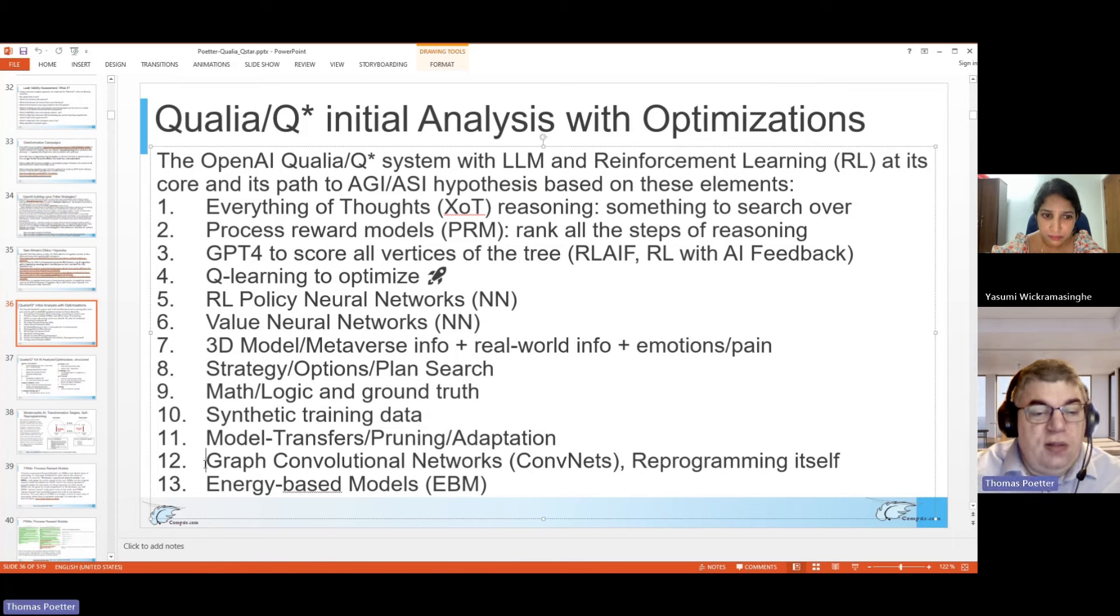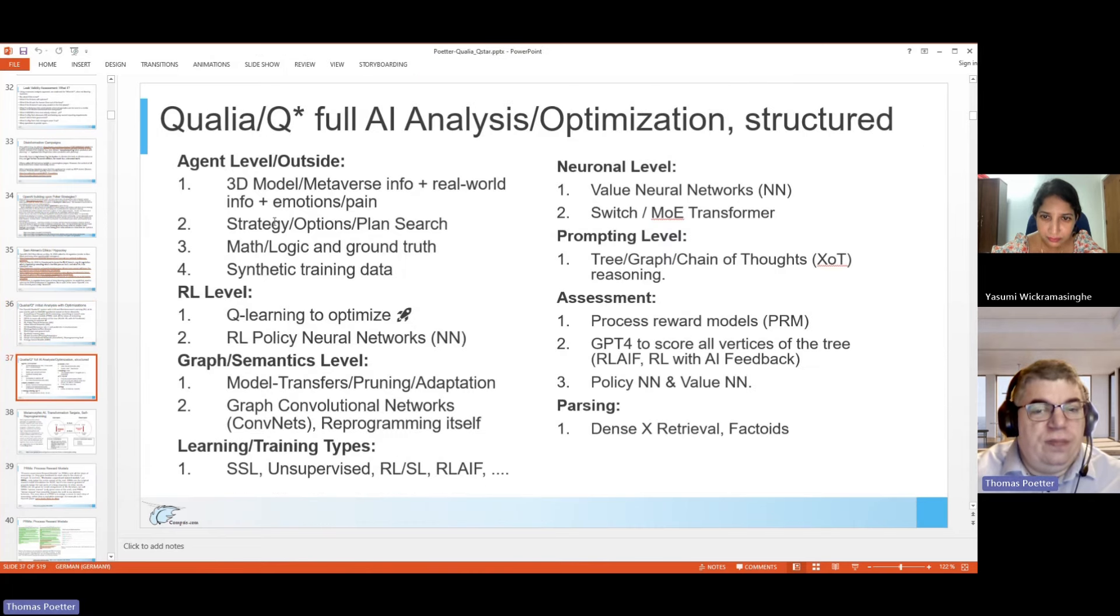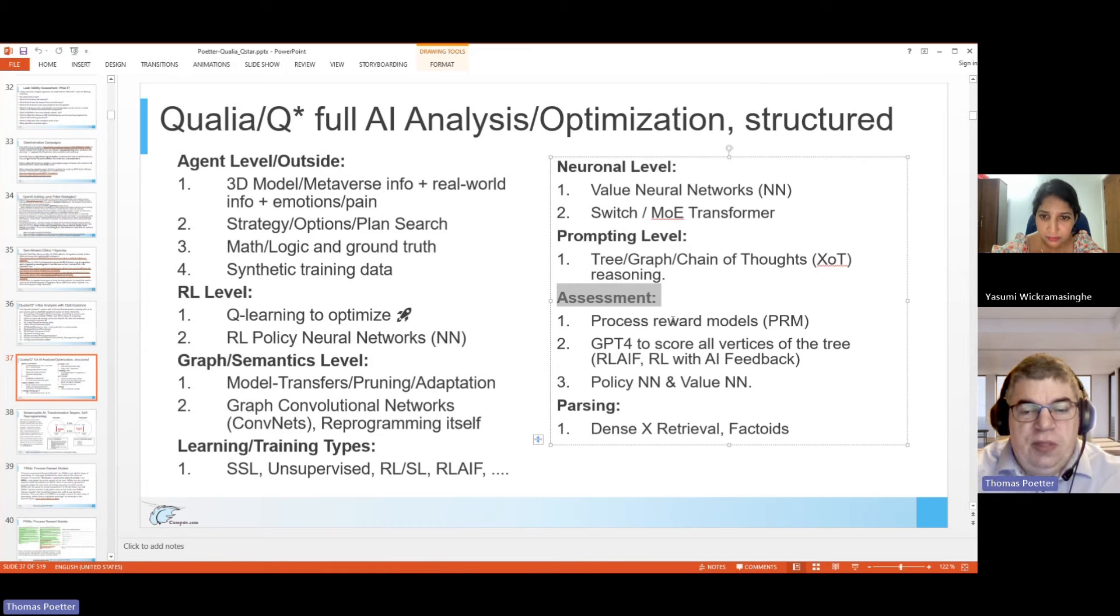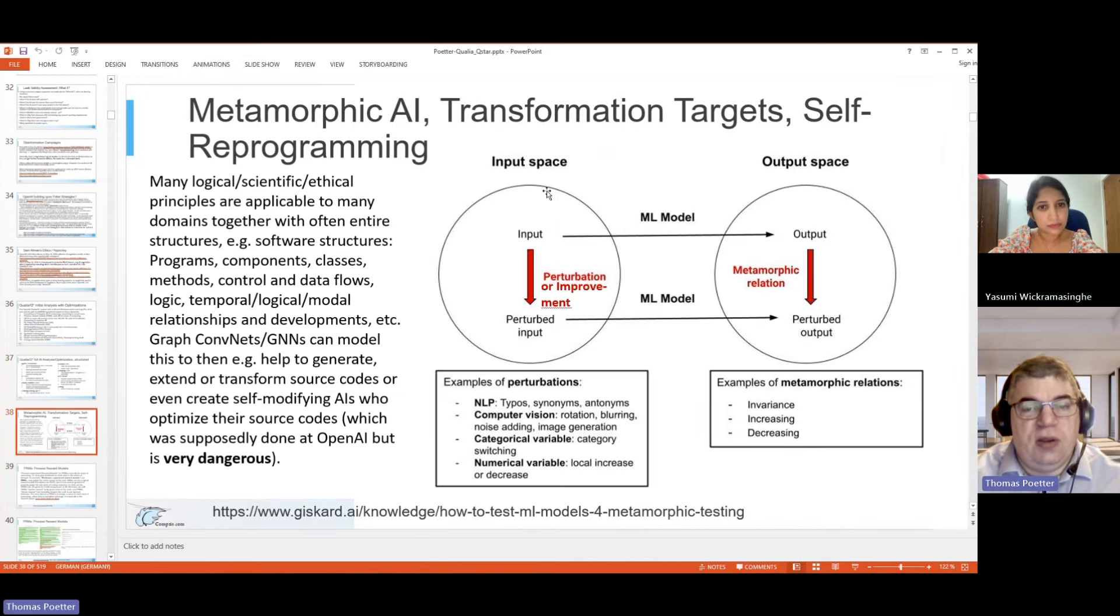Then there's model transfers, pruning, and adaptation, which is interesting. One can take, for example, all open source models and combine them together and get a better model out of them. There's just a paper out on this. Then there are interesting techniques like graph convolutional networks, also in short GCNs, and reprogramming itself, which is dangerous of course. Energy-based models are structured from basically these elements, that was the initial assumption what it is about. So this is pretty much the categories: agent level, outside reinforcement learning level, graphics and semantics level, learning and training types, the neural network level, the prompting level.